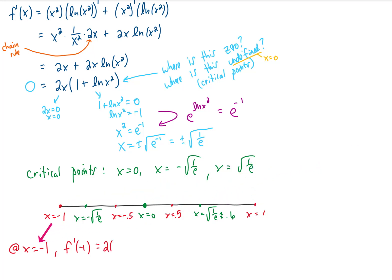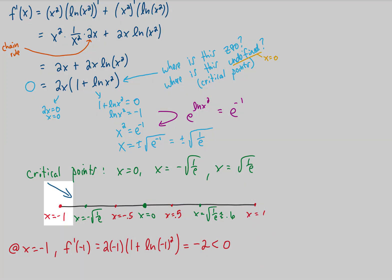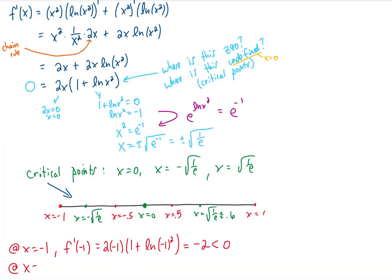Plugging x equals negative 1 into our first derivative gives us this, and recalling that the natural log of 1 is 0, we see that this value is negative 2. What's important about that is that it is negative, and that tells us that our original function is decreasing at that test point and is therefore decreasing on the entire interval from negative infinity all the way up to this first critical point, negative square root of 1 over e. We need to do it again with all of our other test points.